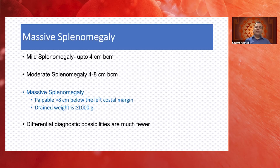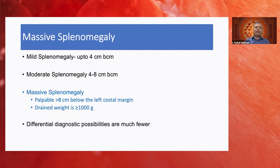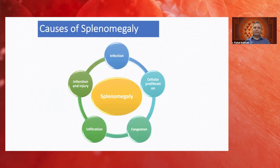Clinically, we grade splenomegaly as mild if up to 4 cm below the costal margin, moderate if 4–8 cm, and massive if more than 8 cm below the left costal margin or if its drained weight is about 1,000 grams. Remember, the normal spleen rarely weighs more than 250 grams, so massive splenomegaly is approximately 1 kg and above. When a patient has massive splenomegaly, the differential diagnosis becomes far more narrow compared to mild or moderate splenomegaly.